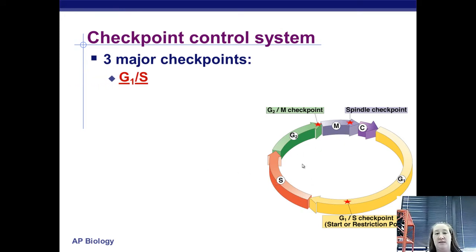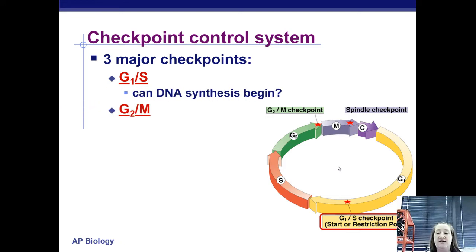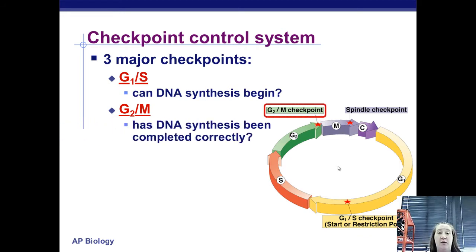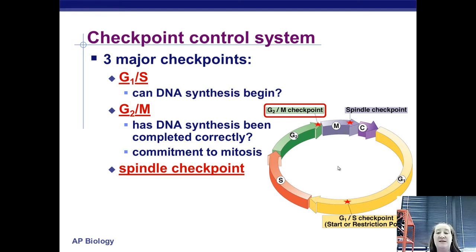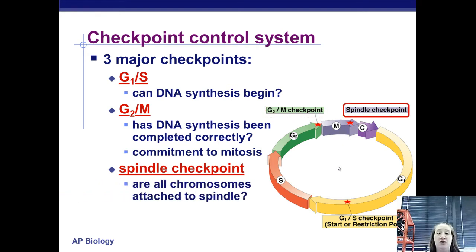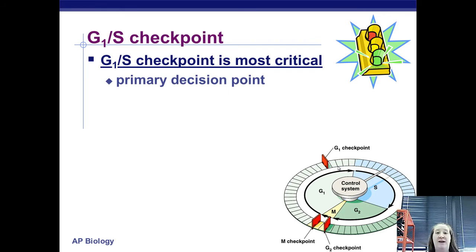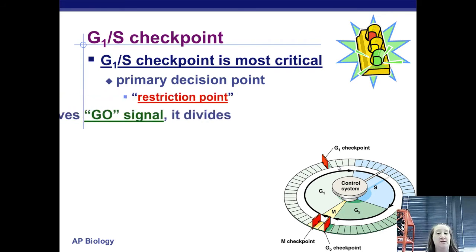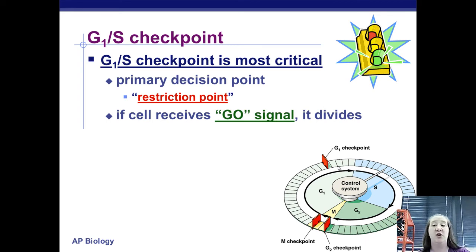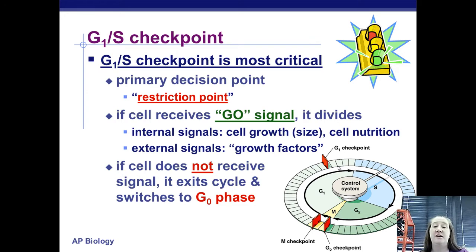The G1/S checkpoint asks: is the cell ready to begin replicating its DNA? The G2/M checkpoint asks: has all the DNA been replicated correctly? Are we ready to divide? The spindle checkpoint happens right before anaphase to make sure all chromosomes are actually attached to a spindle fiber. The G1/S checkpoint is the most critical — it's the primary decision point. If the cell receives a go signal, it will move forward and try to divide. If not, it will go into G0 phase and probably stay there, depending on size, nutrition, and external signals.